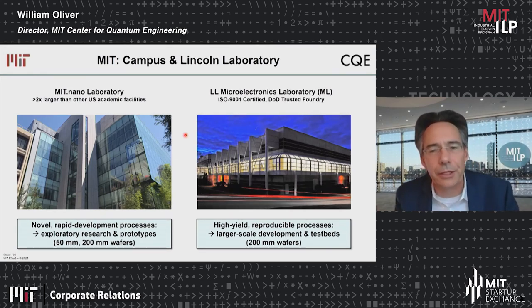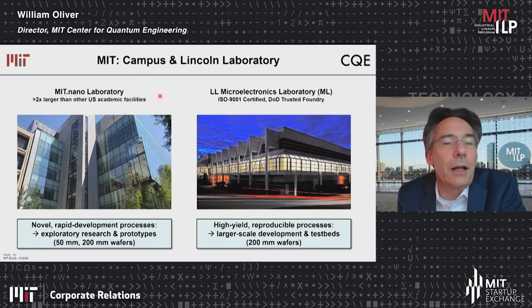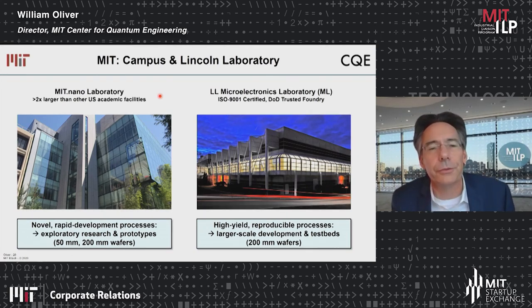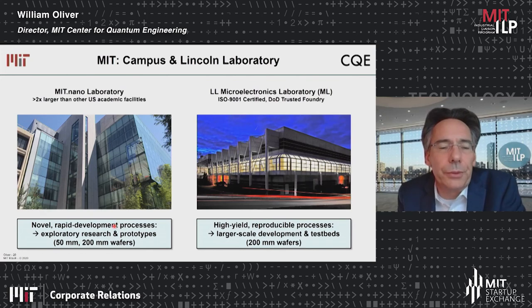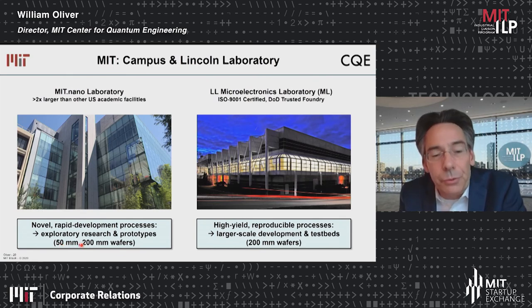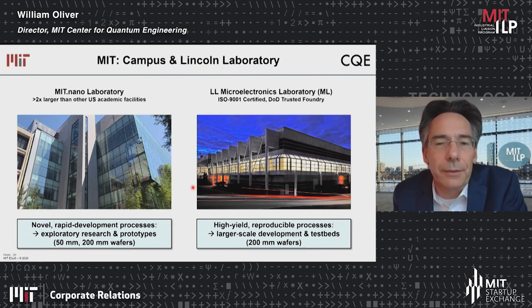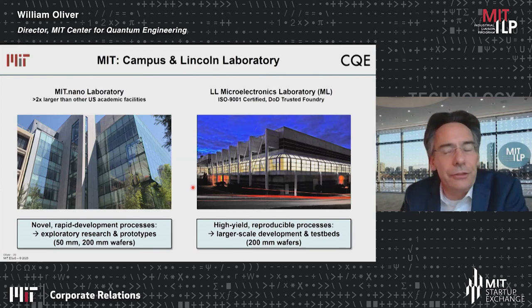This is a place where we can do high-yield, reproducible fabrication processes at a larger scale, building test beds. This fabrication line is a 200-millimeter fabrication line. MIT recently invested more than $400 million in MIT.nano — a companion facility at the MIT campus — which is more than two times larger than any other U.S. academic facility. This is where we can do novel rapid prototyping exploratory research on smaller wafers, and we will have 200-millimeter wafer tools being installed this year. The interaction between MIT.nano and Lincoln Laboratory's MEL is going to be very strong and complementary.